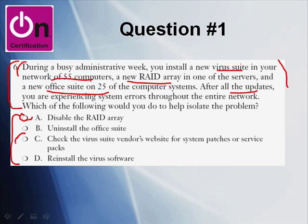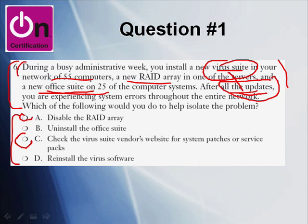According to the authors, C is the correct answer — check the virus suite vendor's website. Their point is: stick with what's in the text, and that's exactly what I teach my students. Never read into the item. Although you may come in with tons of real-world experience, you have to check that at the door. In this item, the virus suite and the updates are meant to be linked, not the office suite and the updates. The trick is to think at a level where you're not overthinking, but deeply and logically enough to stand the best chance of answering the question correctly.